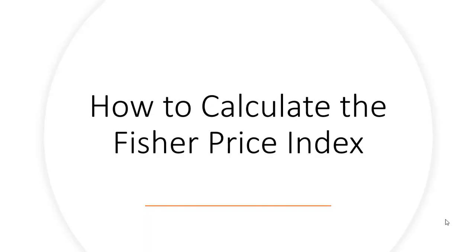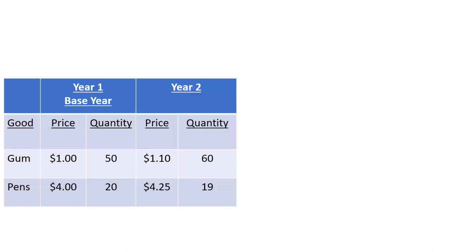Hello. In this video, we're going to calculate the Fisher Price Index. So here we have our table. Here we have two goods, and we have price and quantity data for each year. And we're going to label year one our base year.